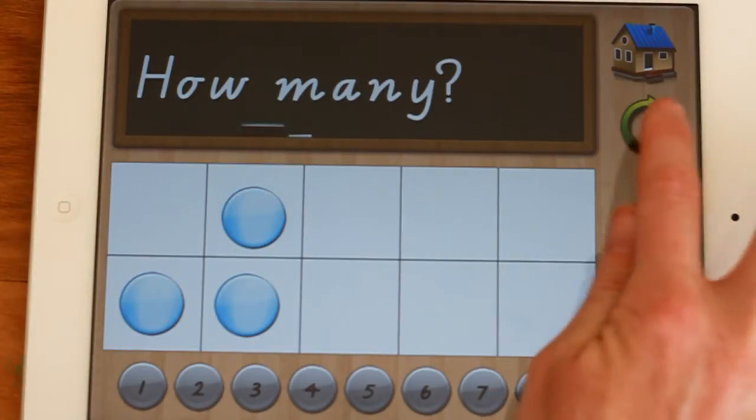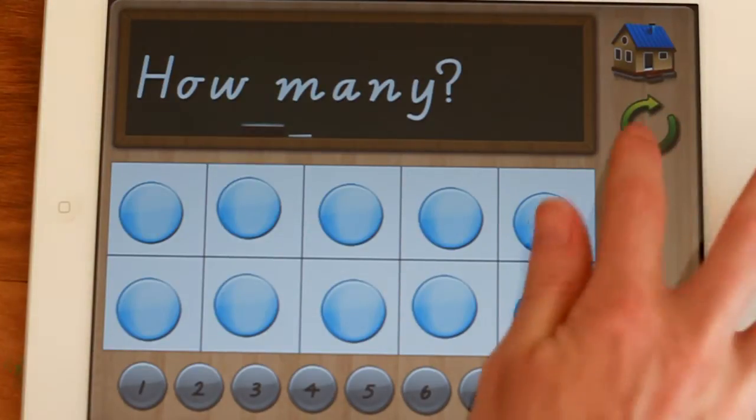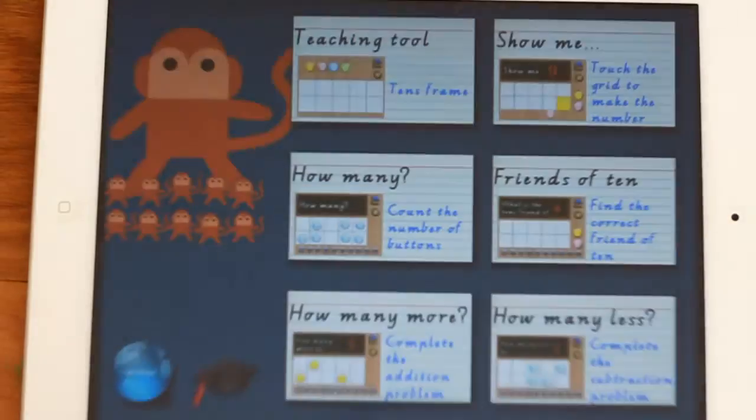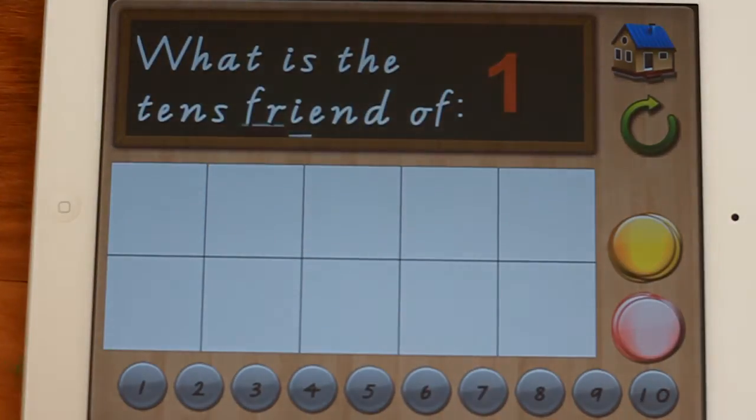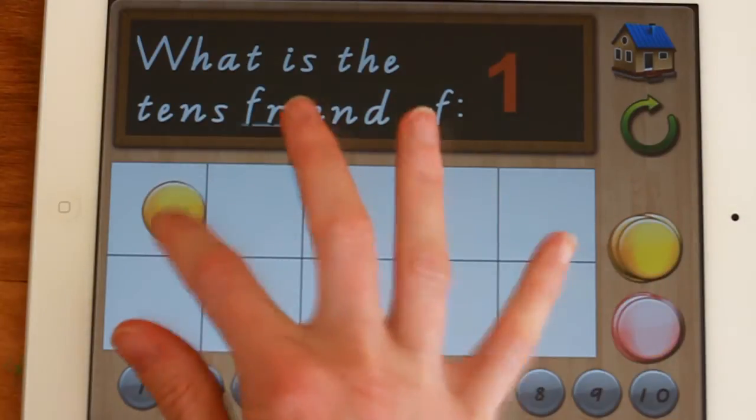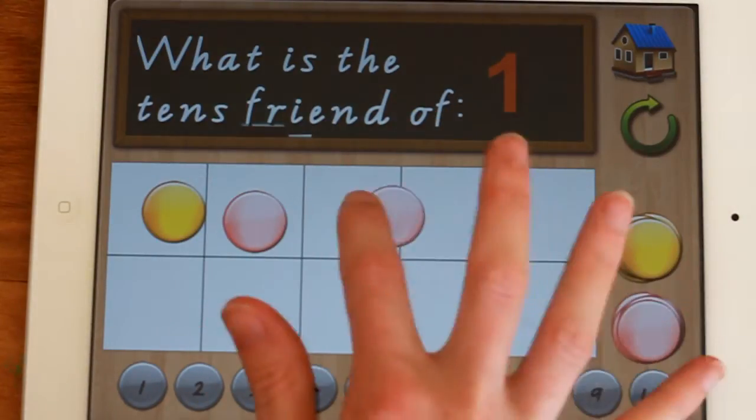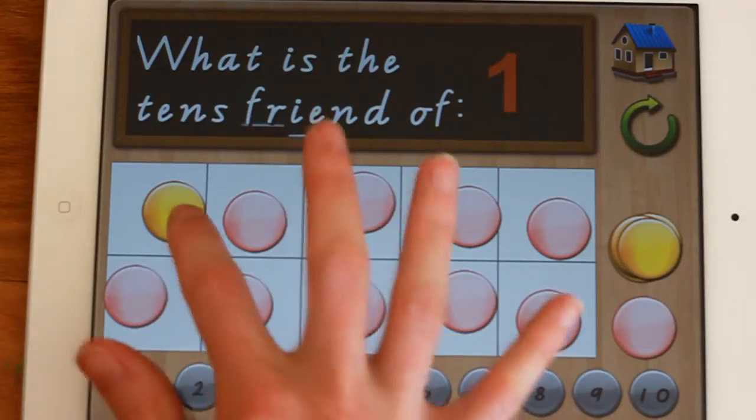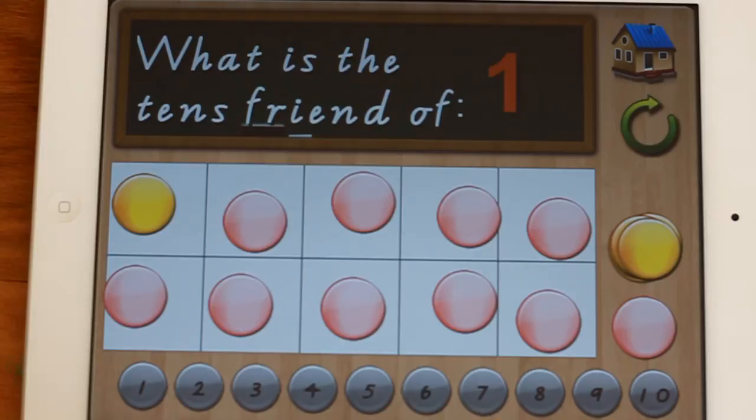This refreshes this. Once again you'll notice that the colors change. Alright, friends of ten. Now for those of you who don't know what a tens friend is, a tens friend is the partner that goes together to make ten. So right now it says, what is the tens friend of one? One, the tens friend is nine.